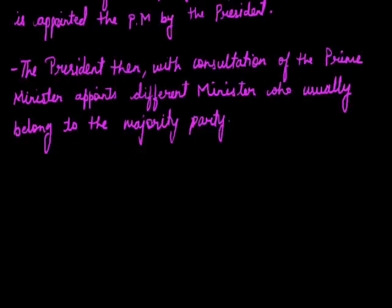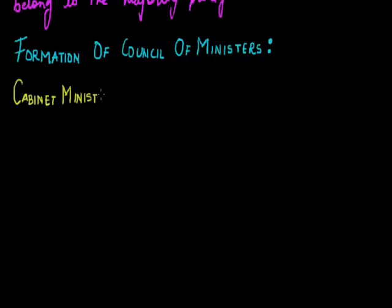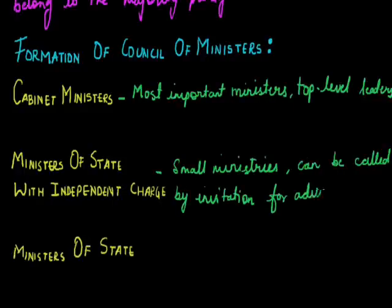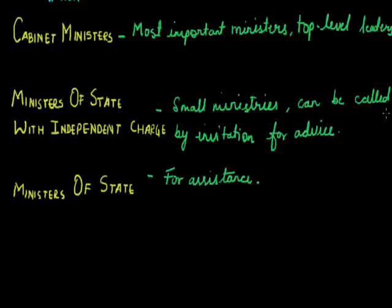The Ministers of State with independent charges get the opportunity to participate in Cabinet meetings when they are invited and asked for their suggestions and opinions. The last level, Ministers of State, is basically for assisting the Ministers of State with independent charges and the Cabinet Ministry. Because most of the decisions in our nation are taken by the Cabinet Ministers, the form of government is also called the Cabinet form of Government.